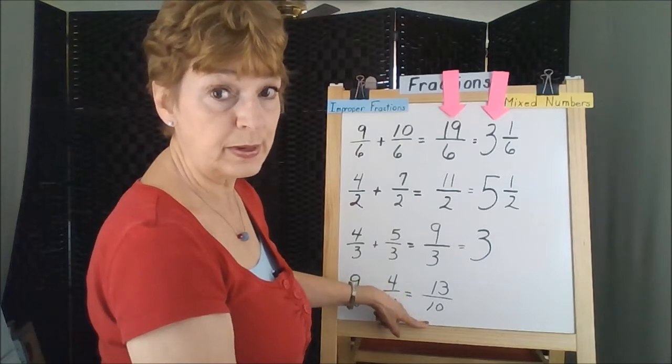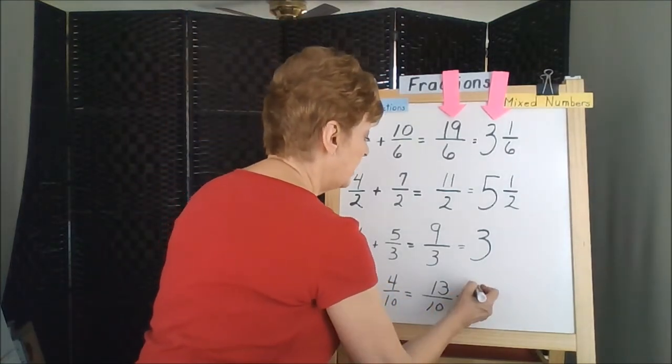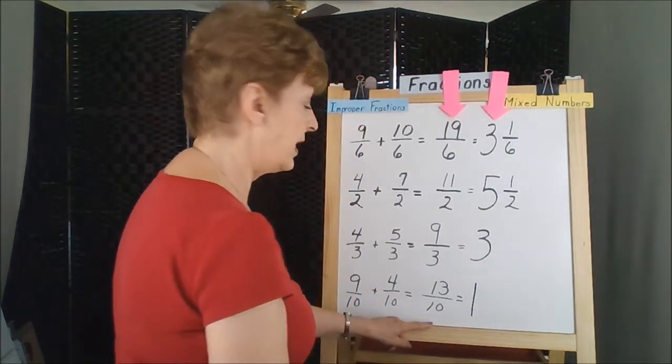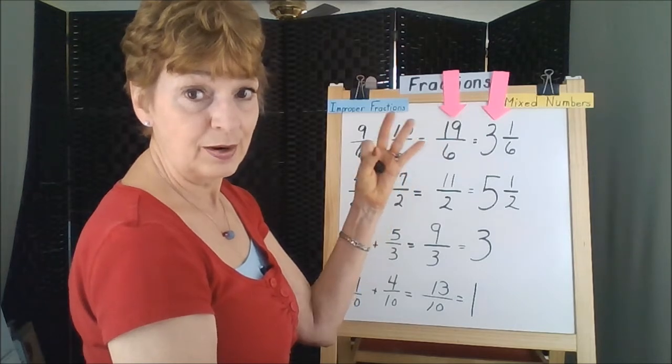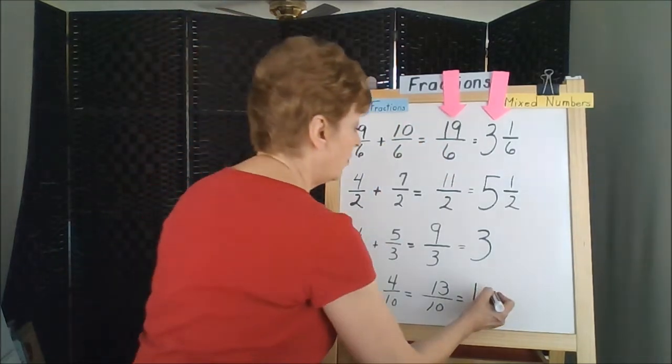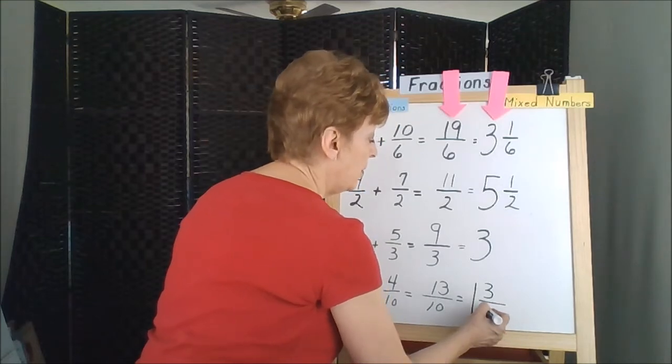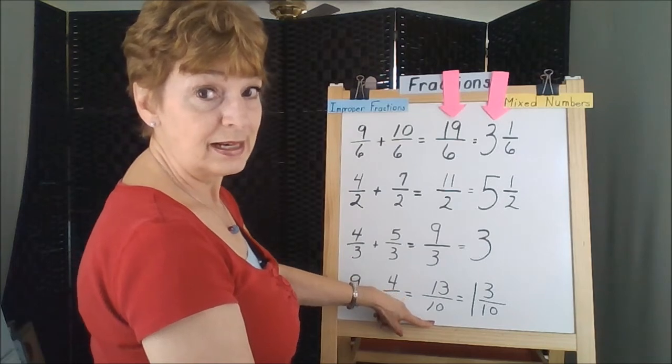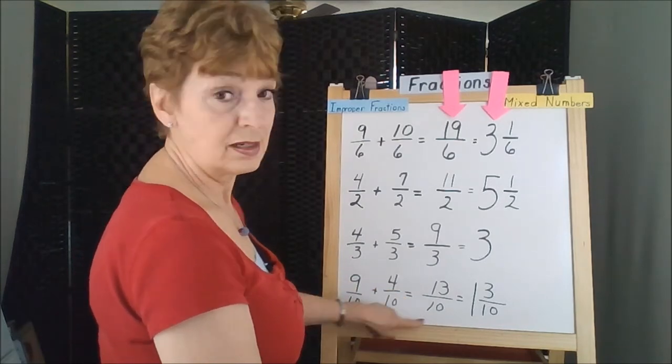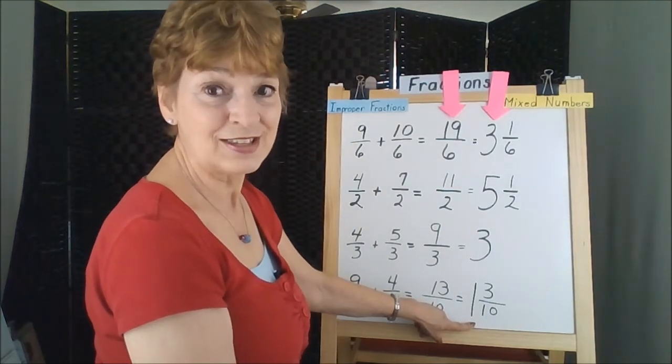10 divides into 13 one time because 1 times 10 is 10, 11, 12, 13, with three pieces left over. 3, and what's the size of the piece? They were tenths. Improper fraction for the calculation. Mixed number for the understanding of the answer.